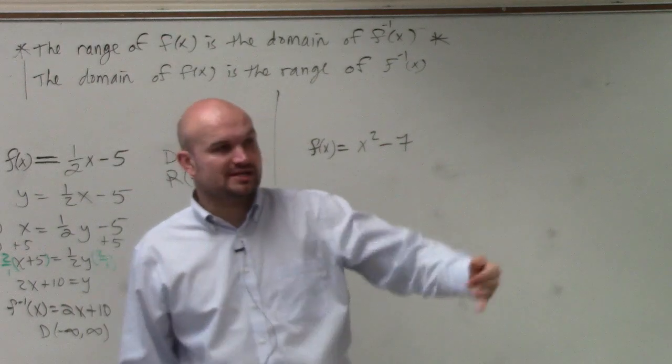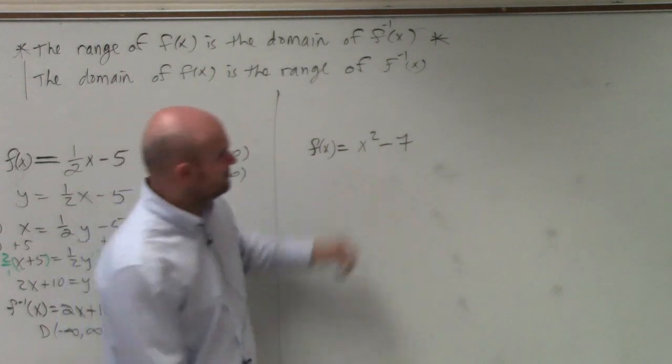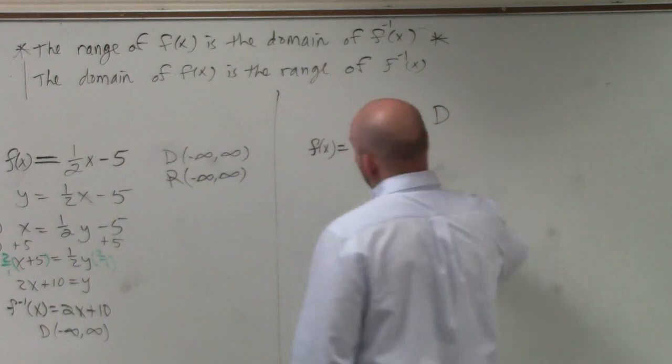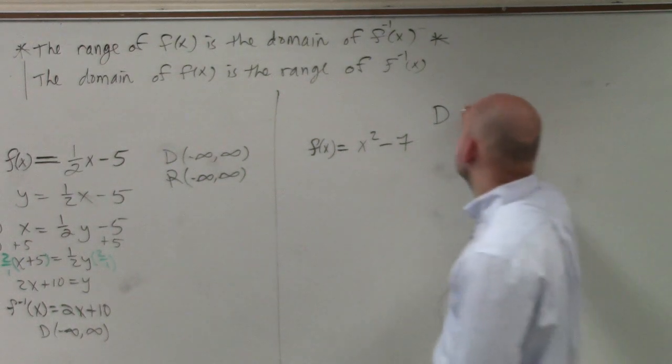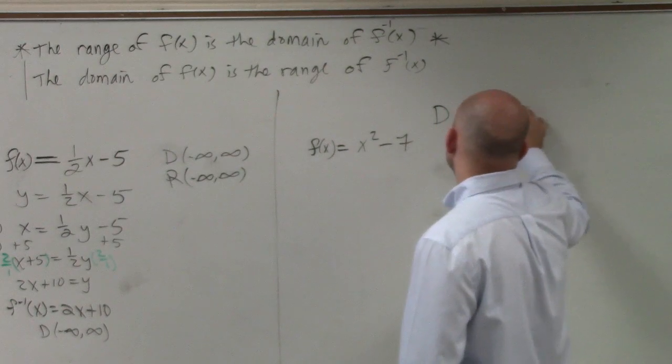If I'm asking you to find the domain and range as well as the inverse, so to find the domain, we can say that the domain of this function - am I dividing by any variable or taking the square root of a variable? So I have no constraints, right? Negative infinity to infinity.